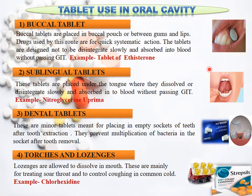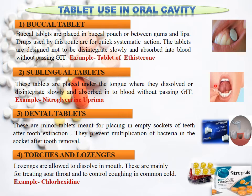Examples of sublingual tablets include nitroglycerin and Uprima. Dental tablets are used during dental treatment. When tooth removal or extraction is performed by the dentist, the dentist places dental cones or dental tablets into the empty sockets of the teeth, where the drug is released, protecting against bacterial infection or growth.